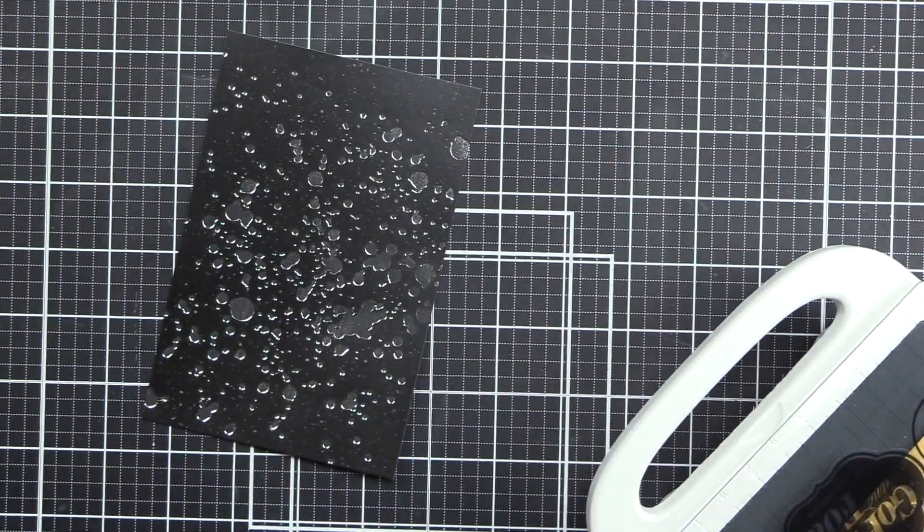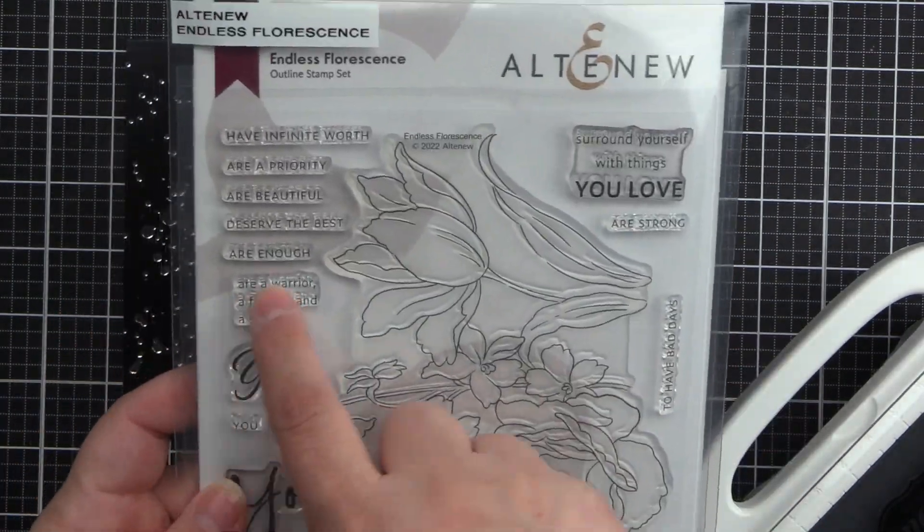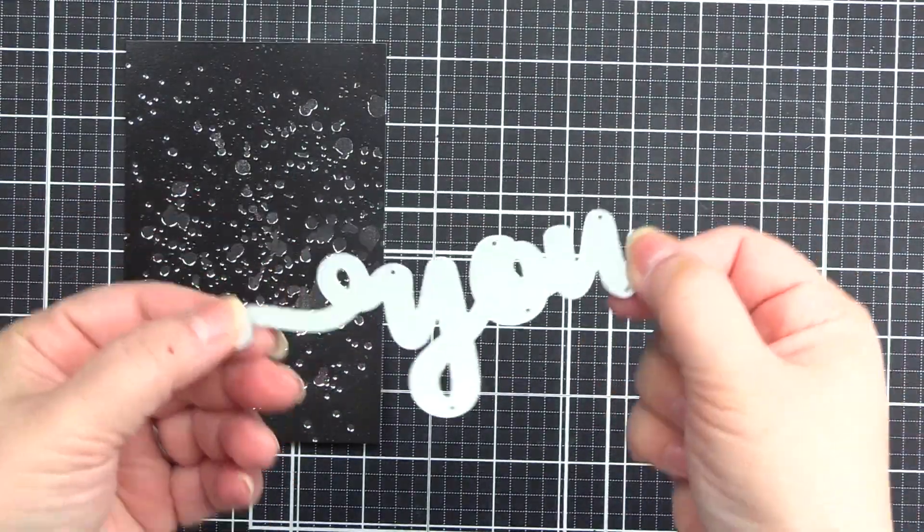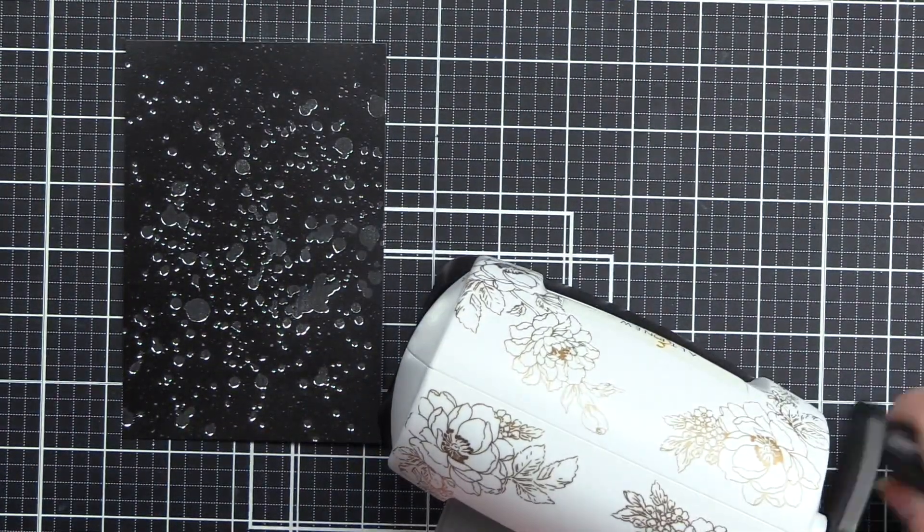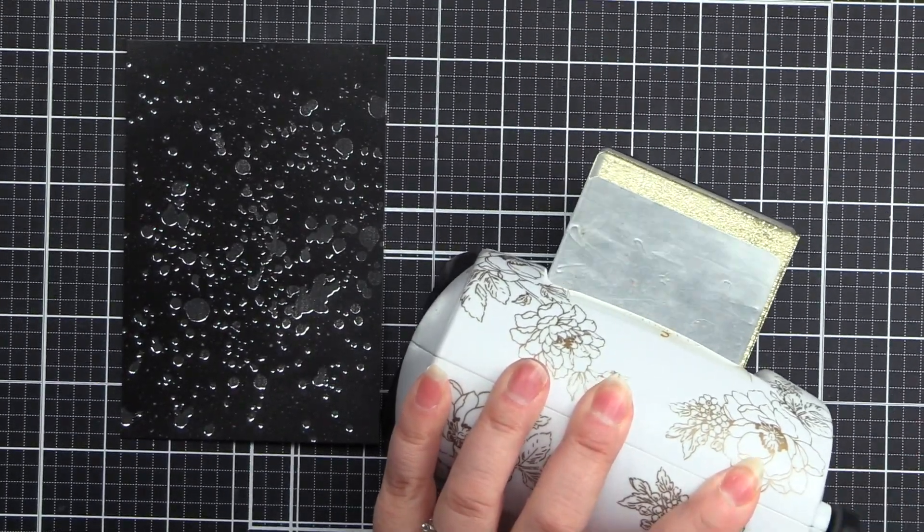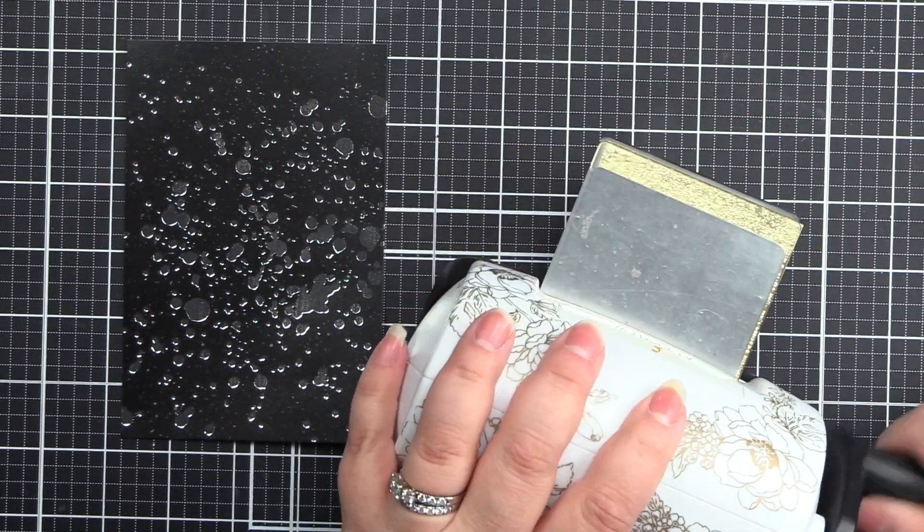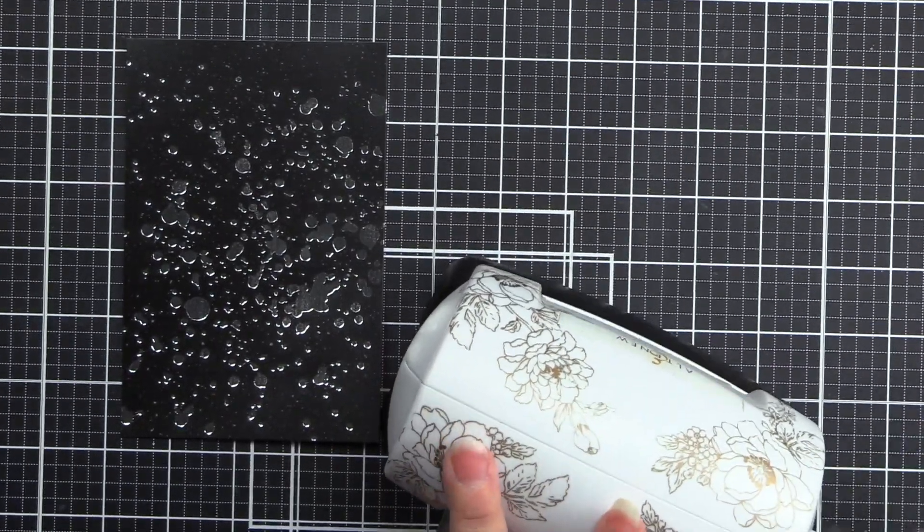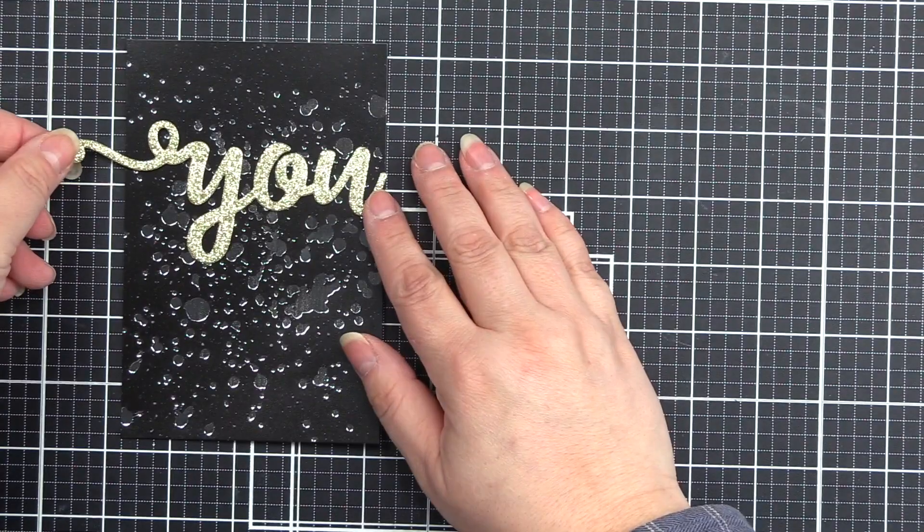All the shiny. So I cut my cardstock down because my pockets are 4 1/4 by 6 1/4. We're going to be using the Endless Fluorescence for the sub-sentiment, and the You Matter die set with gilded cardstock for the main sentiment. I love this font and size of the word you. It is just gorgeous.